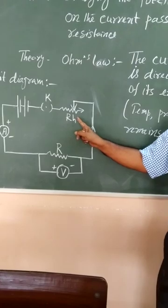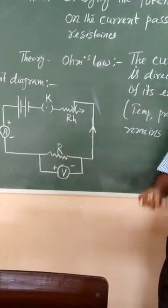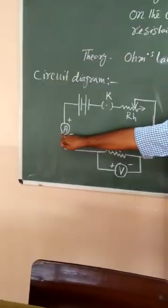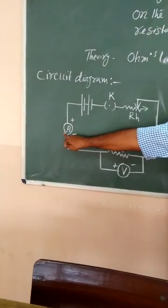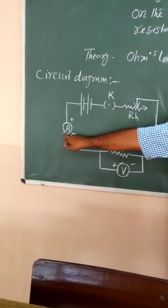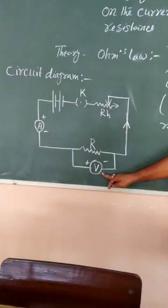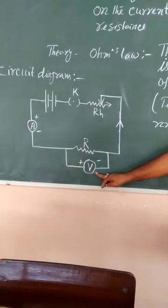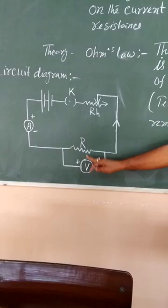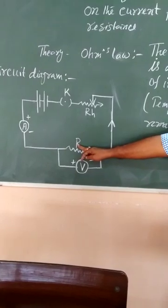This is ammeter, which will measure current. This is the voltmeter which will measure potential difference. This is the unknown resistor which we need to determine the value of.